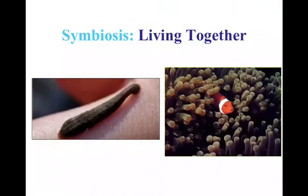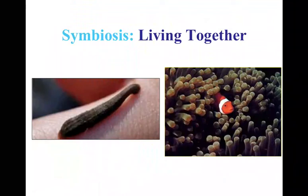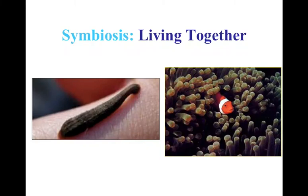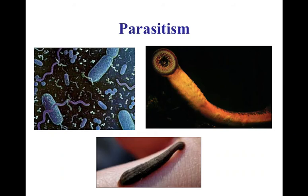These examples lead into the concept of symbiosis — different species living together in a close interaction for an extended period of time and relying on one another. Symbiosis means living together. It can be good or bad for the species involved. One kind of symbiosis is parasitism, where one organism lives in or on another organism — the host — for a lengthy period, utilizing resources from the host without killing it.